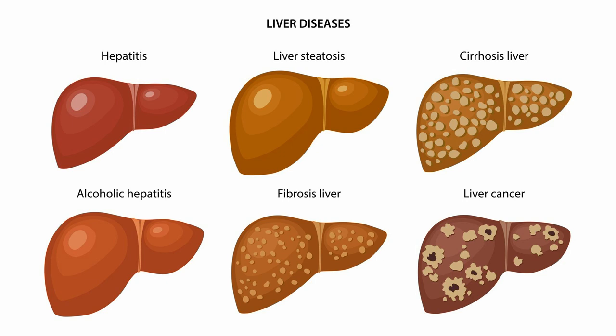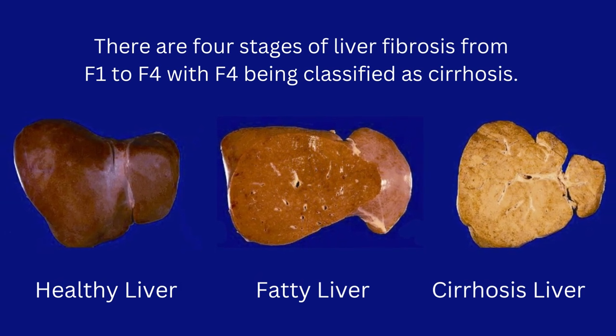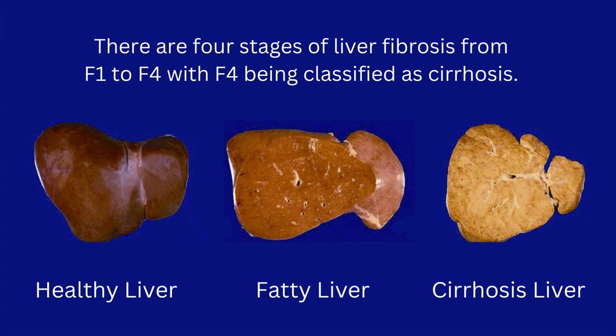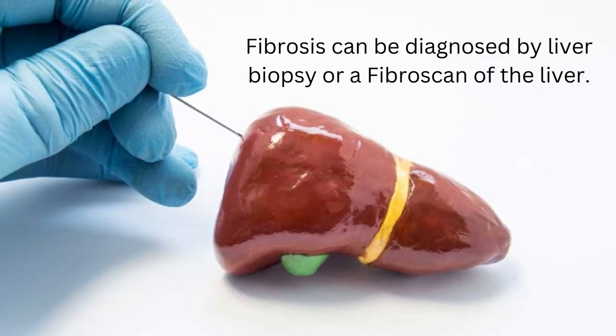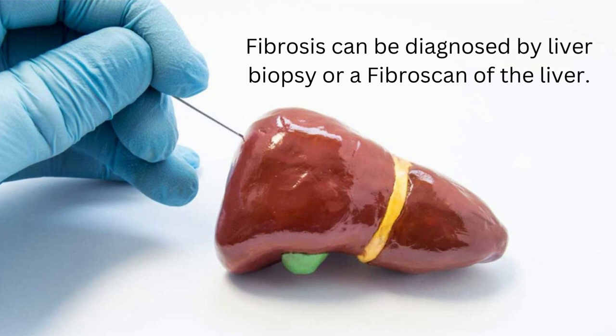The inflammation kills liver cells, which become replaced with scar tissue — a process called fibrosis. Fibrosis is the biggest predictor that NASH will lead to severe liver disease. There are four stages of liver fibrosis, classified from F1 to F4, with F4 being classified as advanced cirrhosis. We can diagnose fibrosis by a liver biopsy, or a special ultrasound scan called a fibroscan.